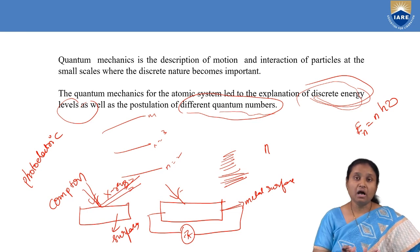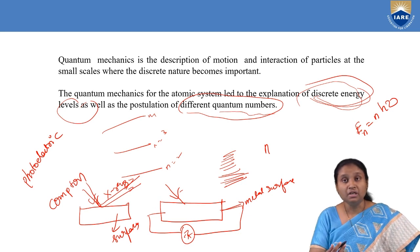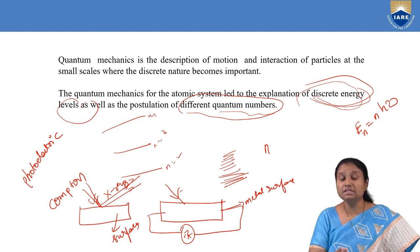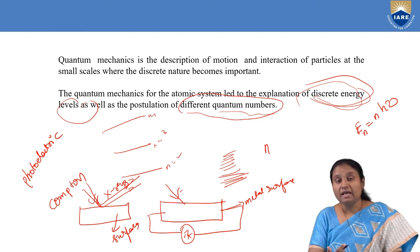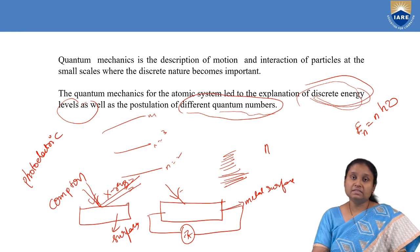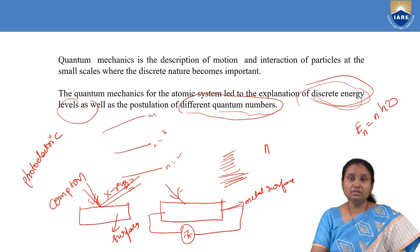So this is how the inefficiency of classical mechanics led to the development of quantum mechanics. We have moved from continuous energy levels to discontinuous energy levels, and having those discontinuous energy levels is nothing but the quantization of energy. With this, I am going to finish my video here. Thank you.